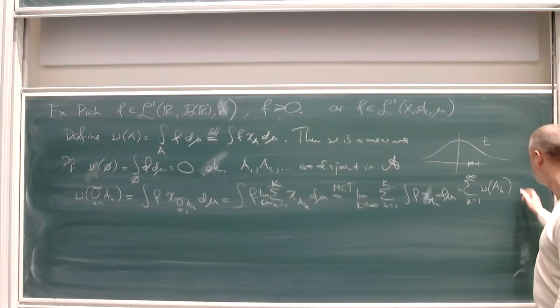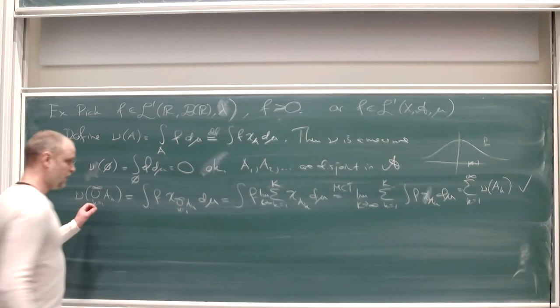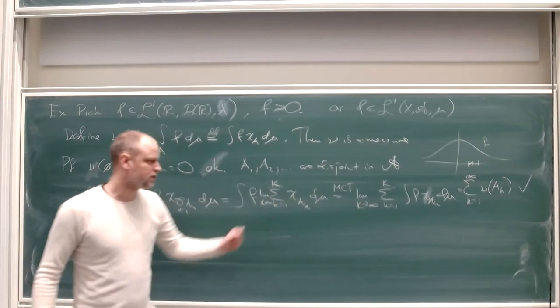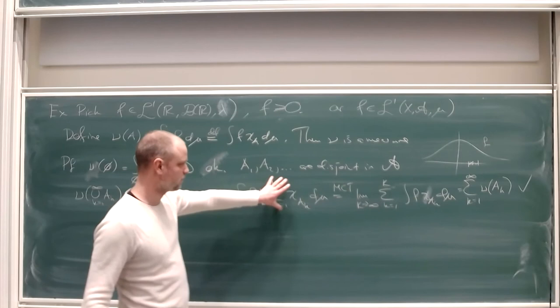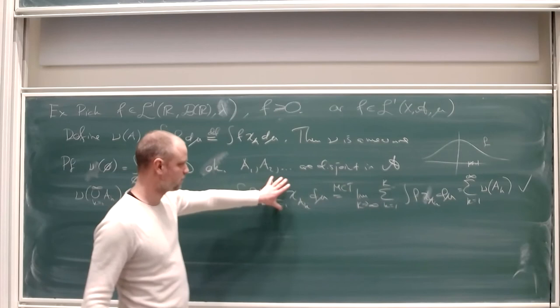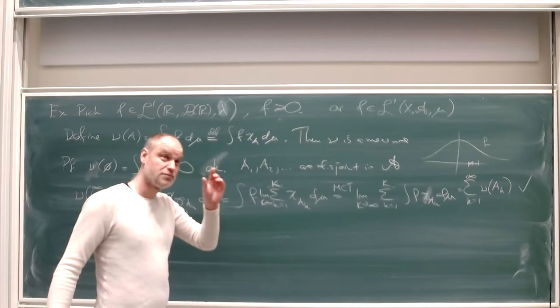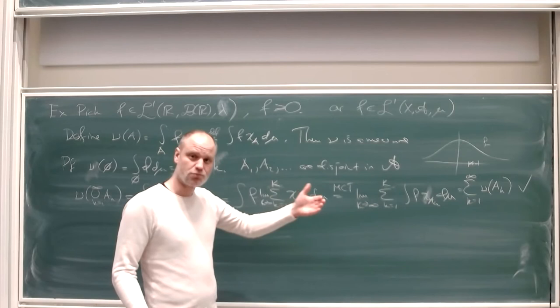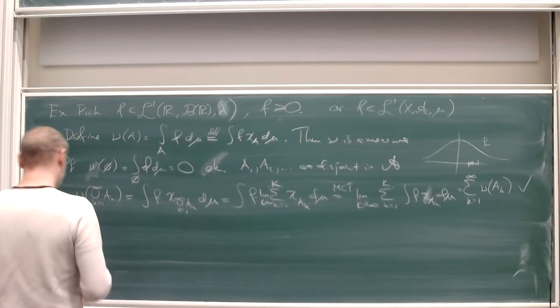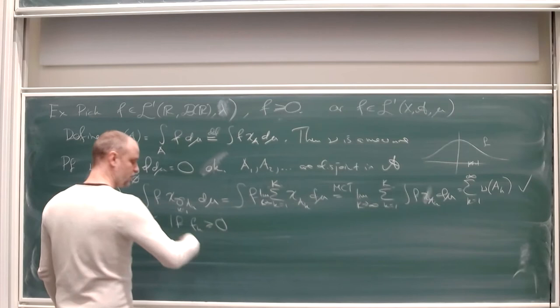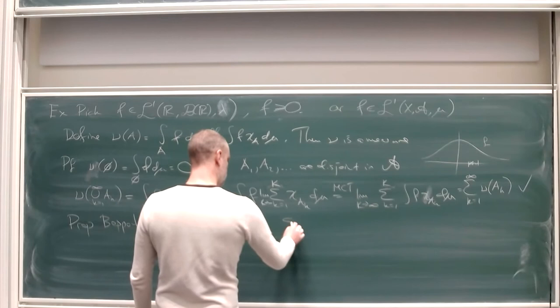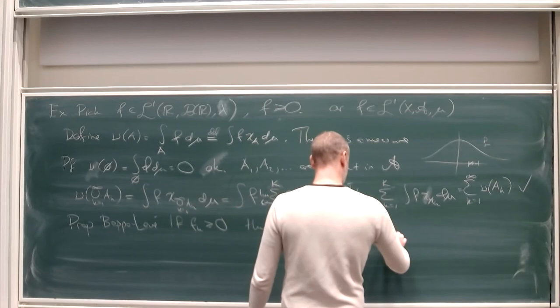By definition, the infinite sum from one to infinity equals the corresponding sum, giving the sum of mu-tilde(A_k) as required. This argument also illustrates Beppo-Lévy's theorem: if f_k ≥ 0 are measurable, then sum_{k=1}^∞ integral f_k d mu = integral (sum_{k=1}^∞ f_k) d mu — which is equivalent to MCT applied to infinite sums.